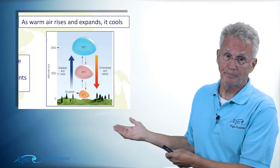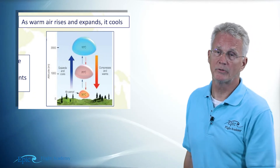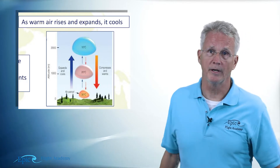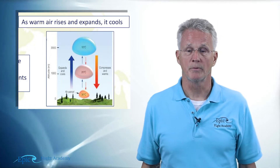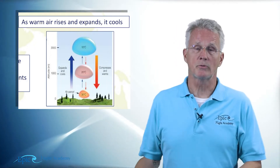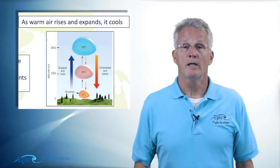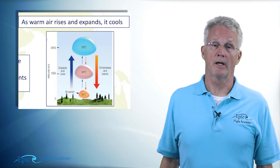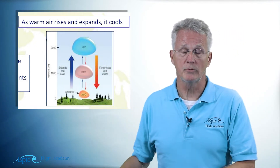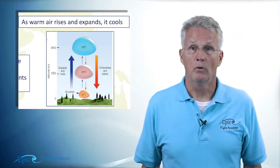To begin, let's start with the diagram from Epic's online Private Pilot course. In this diagram you see an orange parcel of air down near the surface at 30 degrees Celsius, and as it rises through the air it cools. Or, starting at the top, you see a large blue parcel of air at 10 degrees Celsius, and as it descends through the air it warms.